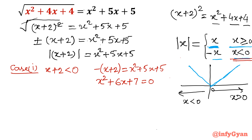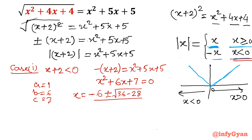It is a quadratic equation, so we apply the quadratic formula. Here a = 1, b = 6, c = 7. Applying: x = (-6 ± √(36 - 4×1×7)) / 2 = (-6 ± √(36 - 28)) / 2 = (-6 ± √8) / 2. Since √8 = 2√2, this becomes (-6 ± 2√2) / 2 = -3 ± √2.